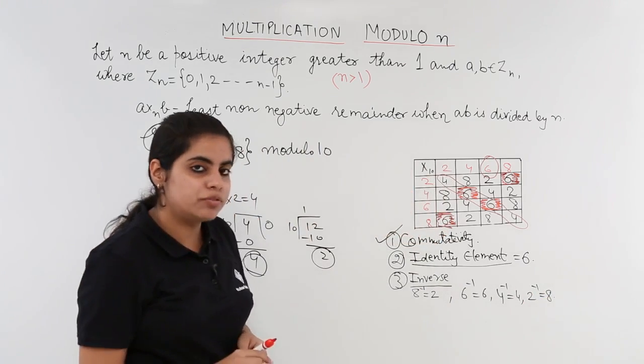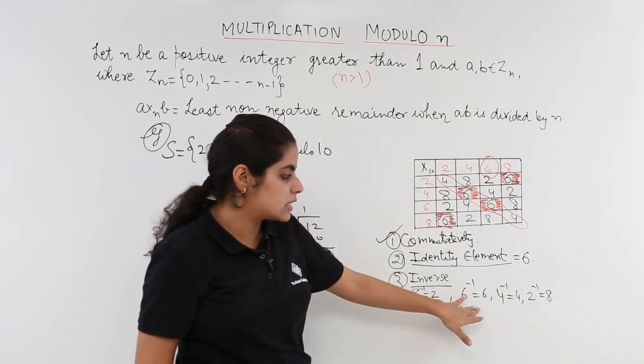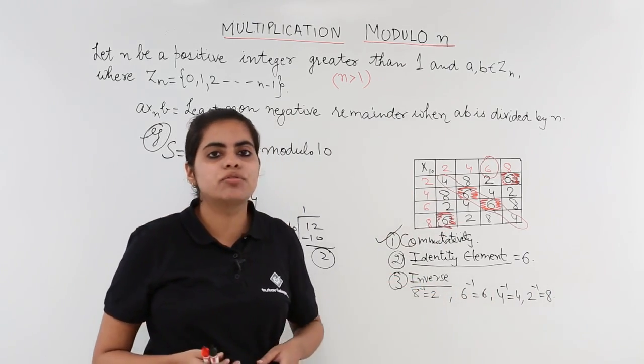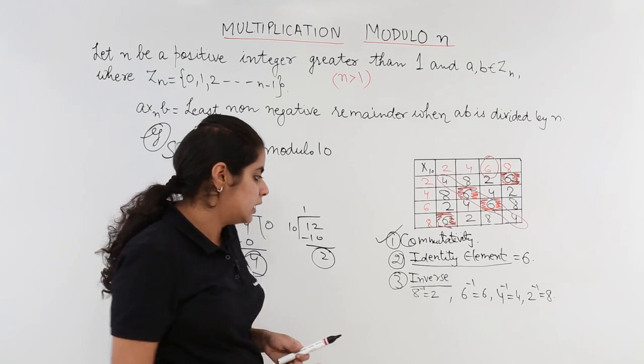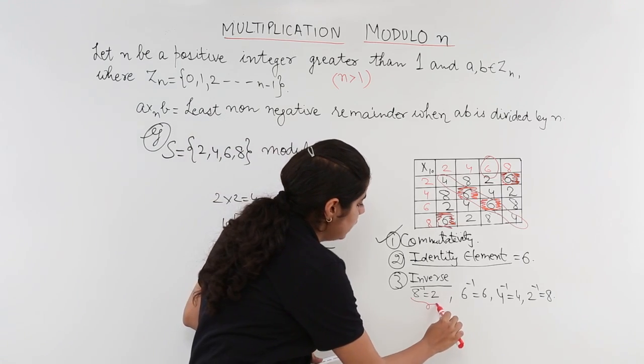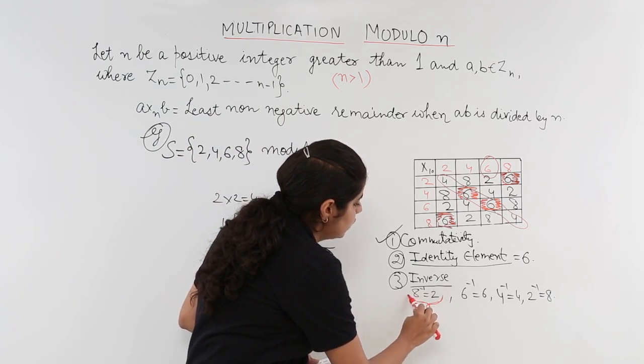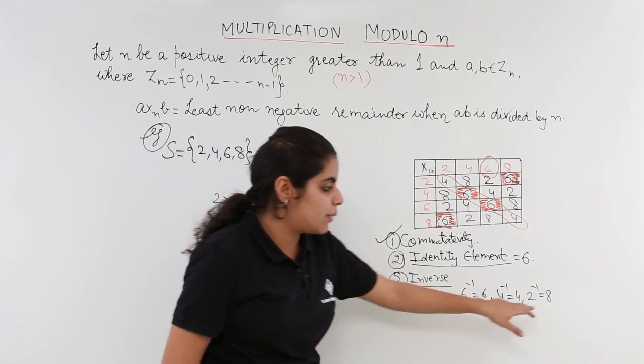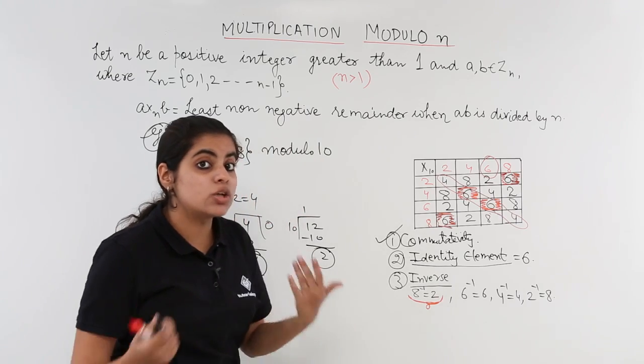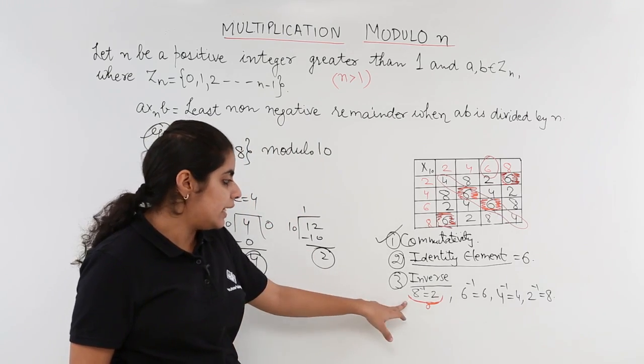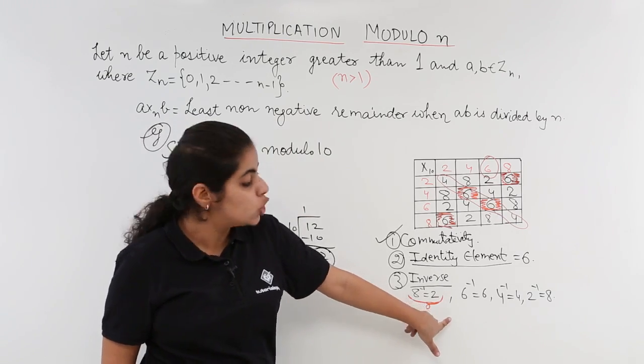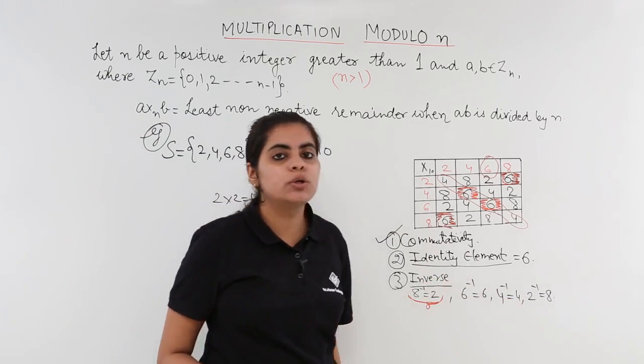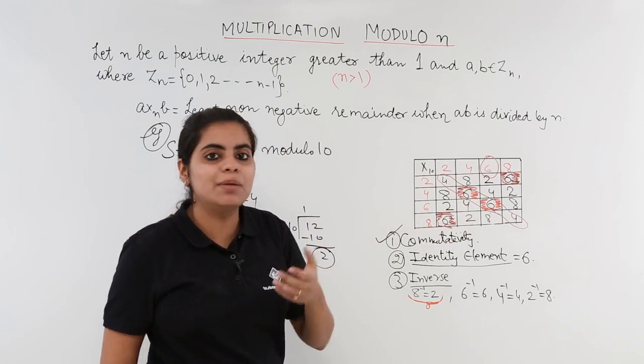Now observe few things. That 6 and 6 are the inverses of each other. 4 and 4 are the inverses of each other. But when I found out 8 inverse is equal to 2, I don't need to do this step again. It is automatically understood that 8 inverse is equal to 2. So 2 inverse should be equal to 8. You don't need to check it from the table as well.